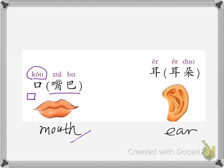This is ear. The pronunciation for ear is er, er. The writing for er is: this is the first stroke, this is the second stroke, this is the third stroke, this is the fourth stroke, this is the fifth stroke, and this is the sixth stroke. Er, we also say...